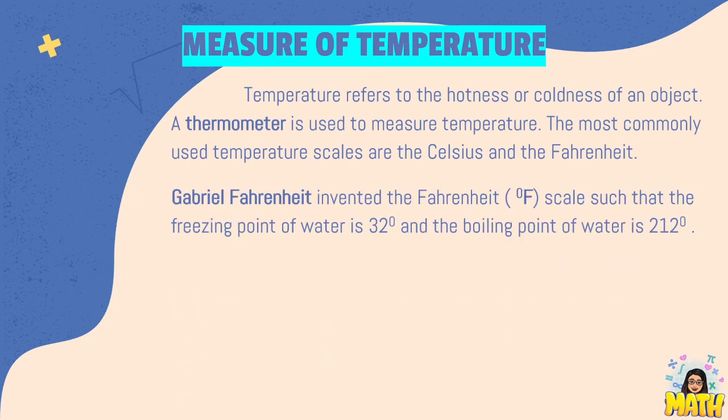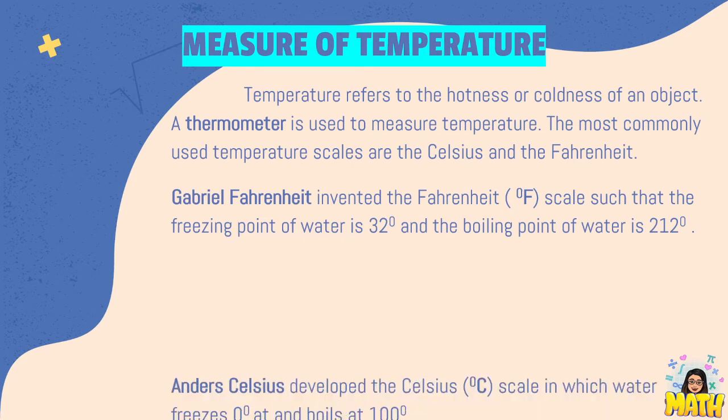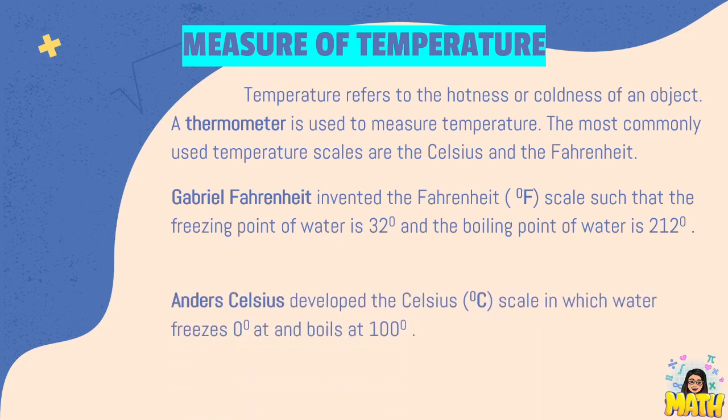Gabriel Fahrenheit invented the Fahrenheit scale such that the freezing point of water is 32 degrees and the boiling point of water is 212 degrees Fahrenheit. While Anders Celsius developed the Celsius scale in which water freezes at zero degrees and boils at 100 degrees.